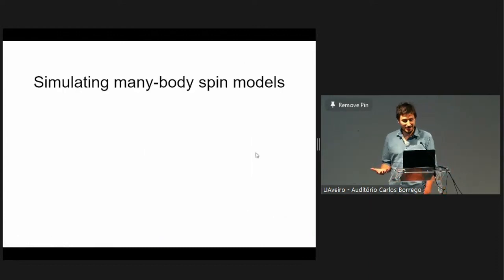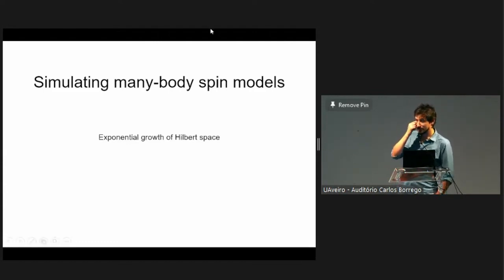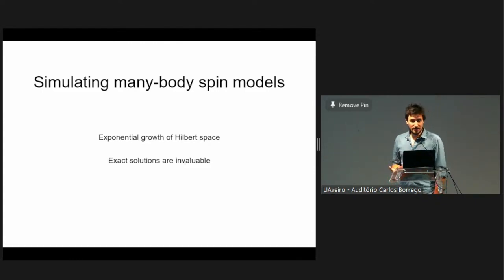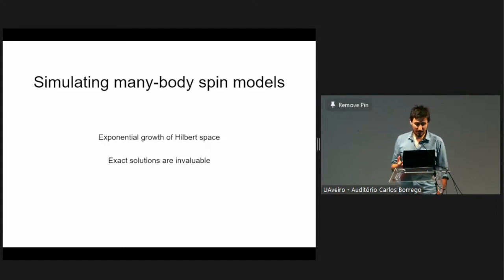In general, simulating many-body spin problems is difficult. The major issue is that the Hilbert space dimension grows exponentially with the number of qubits. So one of the things that is really important is finding exact solutions to many-body spin models.